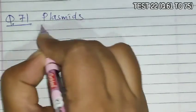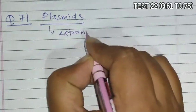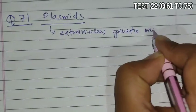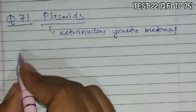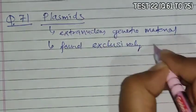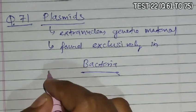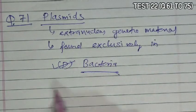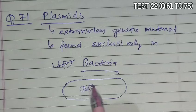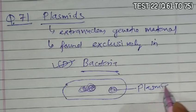Question 71 asks that plasmids are found in. Plasmids are double-stranded circular DNA and are extra-nuclear genetic material. They are found exclusively in bacteria. In bacteria, in spite of the absence of a nucleus, there is a nucleoid containing double-stranded circular DNA known as plasmid. So option D is the correct answer.